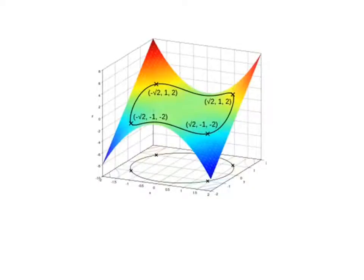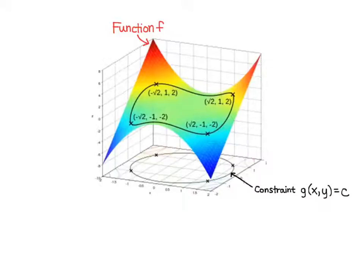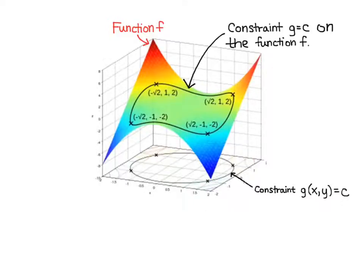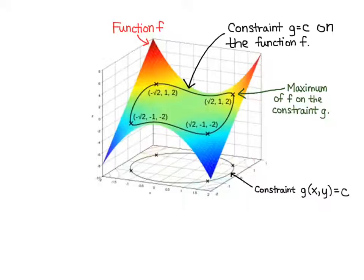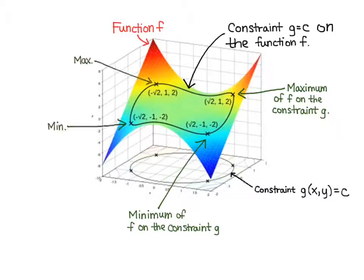Let's look at one more example. We have our function f, which is a rainbow-colored surface. We have our constraint g of xy equals c down on the xy plane, and the black line drawn on the function is the constraint superimposed on the surface — that's what it looks like if we drew the circle on our surface. You can see where the maximums of f are on that constraint: a maximum at (√2, 1, 2), a minimum at (√2, −1, −2), and two other maximums and minimums over on the left.